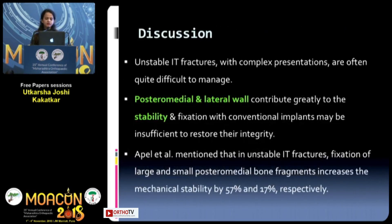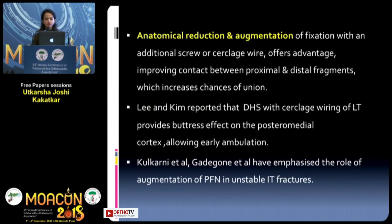Unstable IT fractures are often quite difficult to manage, and the posterior medial and lateral wall contribute greatly to their stability. Fixation with conventional implants may be insufficient at times to restore their integrity. Apple et al. suggested that fixation of large and small posterior medial fragments increases stability by 57% and 17% respectively. The anatomical reduction and augmentation of fixation with an additional screw or wire improves contact between fragments and increases chances of union. Similar studies by Lee and Kim, Kulkarni et al., and Gadegoni et al. have emphasized the role of augmentation in unstable IT fractures.